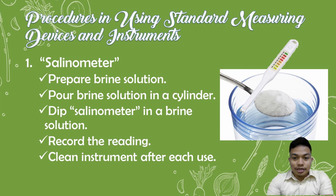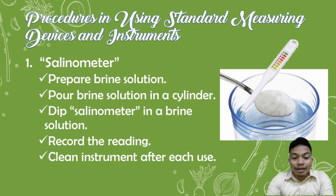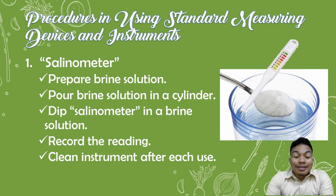Here are the procedures in using a standard measuring device like a salinometer. First, prepare the brine solution — it is a mixture of water and salt. After preparing the brine solution, pour it into the cylinder, as you can see in the picture. Then, dip the salinometer into the brine solution and wait for the reading. After seeing the reading on the salinometer, record the reading. Lastly, clean the instrument after use.